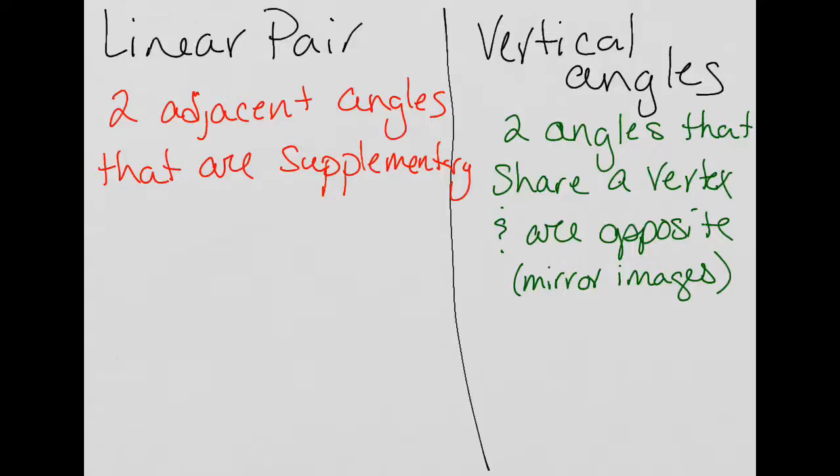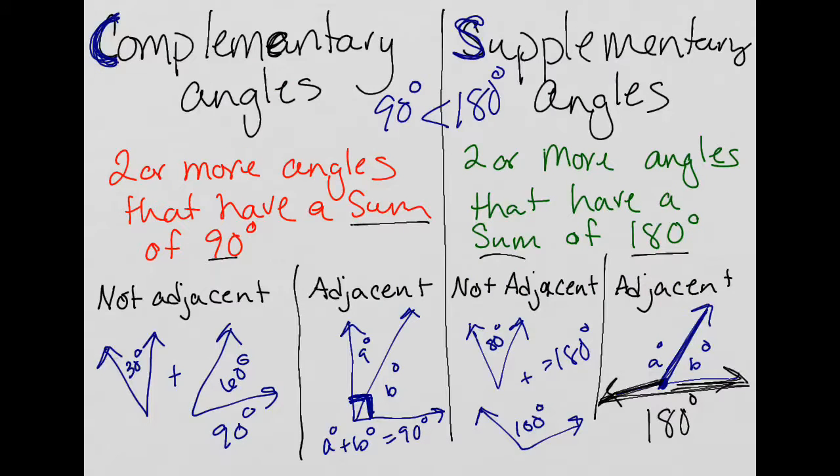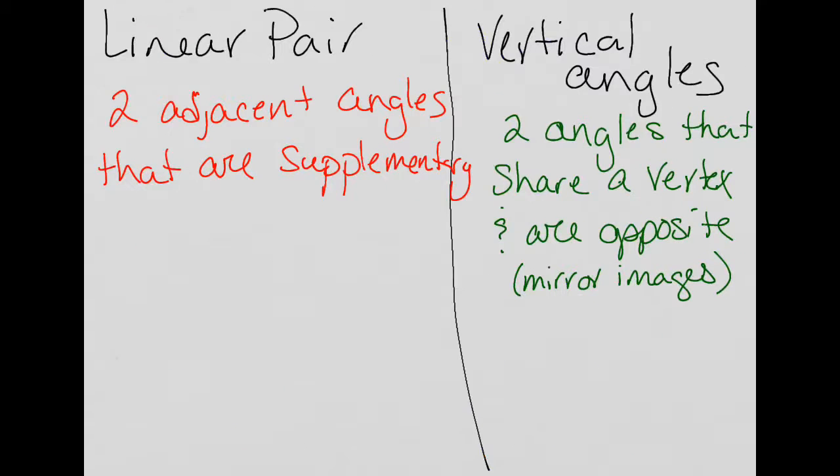A linear pair is basically what we just drew for that example of adjacent supplementary angles. They have to be adjacent, meaning they have to have that common ray and common vertex. And they have to be supplementary, meaning their rays, the other ray that they don't share, has to be 180 degrees. So this is a linear pair with these two angles.